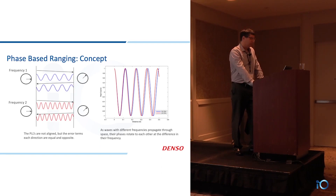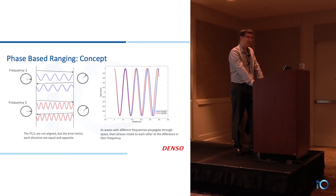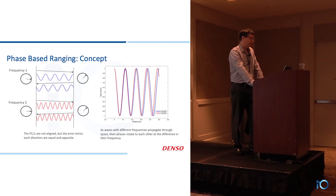What happens in time is: on frequency one, indicated by the blue sine wave, the initiator sends a phase to the reflector, and then the reflector sends it back. The two clocks indicate that the PLLs have an initial starting state that are not equal or identical, but because of the two-way nature of the tone exchange, those terms end up getting cancelled out.